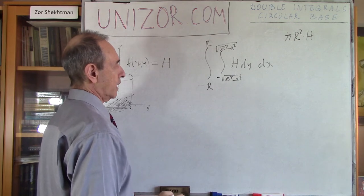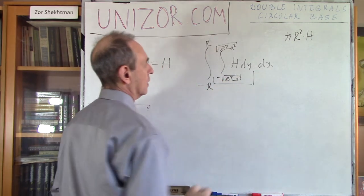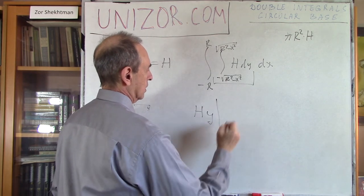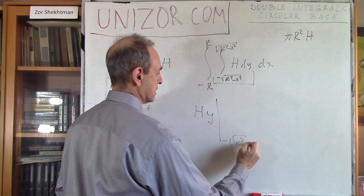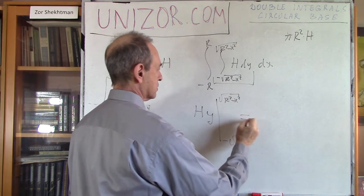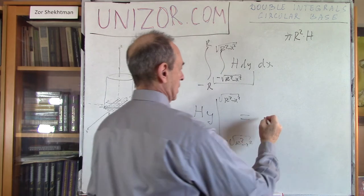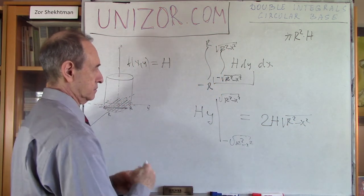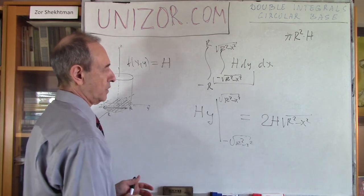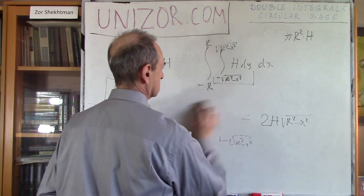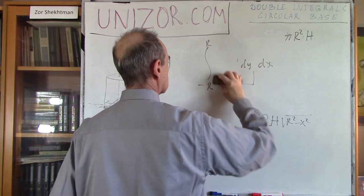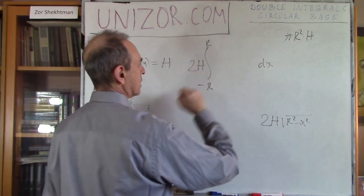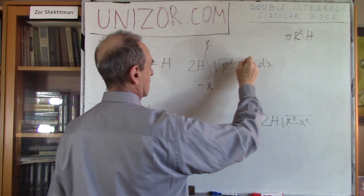This inner integral — since h is a constant — gives h·y evaluated from minus square root of r² minus x² to plus square root of r² minus x², which equals 2h times square root of r² minus x². That's my result from the inner integration. My second integration then becomes 2h — which I can put outside — times the integral from minus r to r of square root of r² minus x² dx.